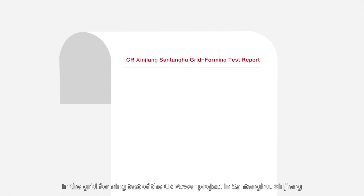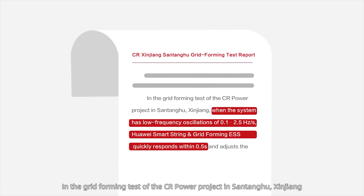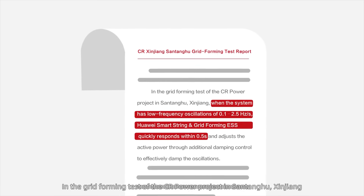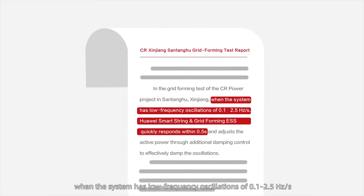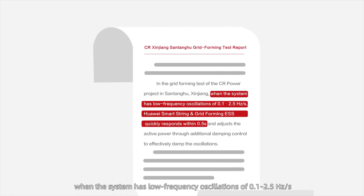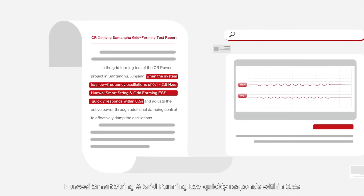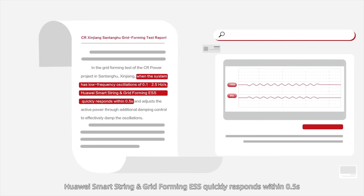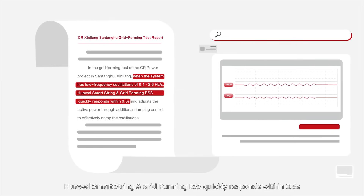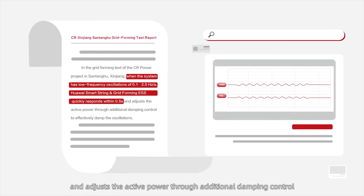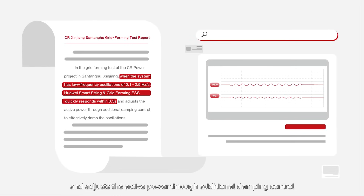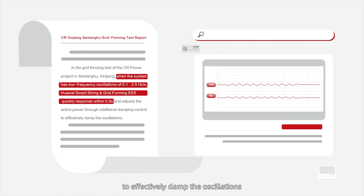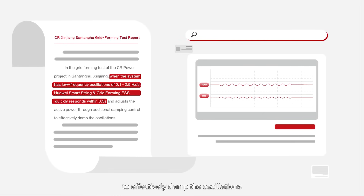In the grid-forming test of the CR Power Project in Santanghu, Xinjiang, when the system has low-frequency oscillations of 0.1 to 2.5 Hz per second, Huawei SmartString and Gridforming ESS quickly responds within 0.5 seconds and adjusts the active power through additional damping control to effectively damp the oscillations.